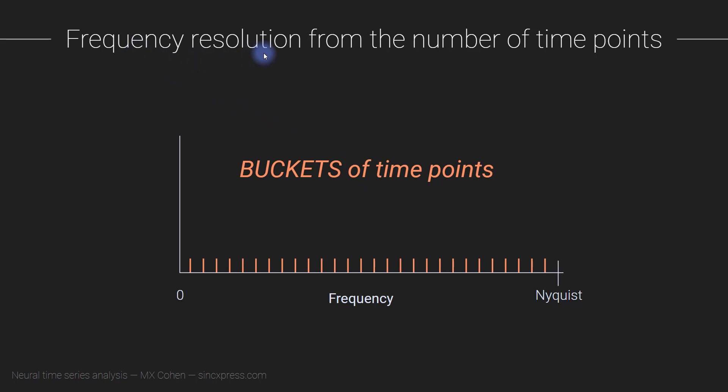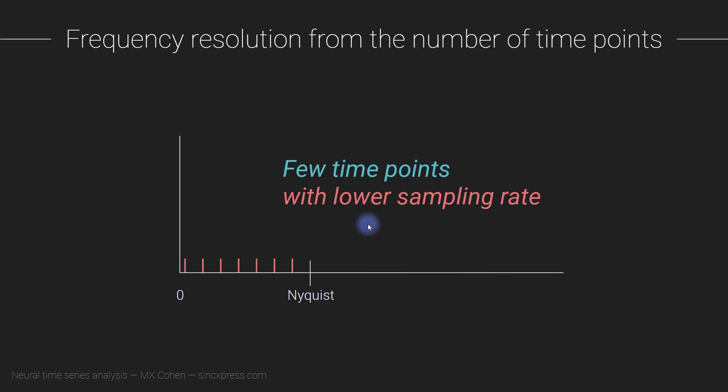The frequency resolution is determined by the number of time points. It is also true that if you have a relatively small number of time points with sparse frequency resolution, and then you change the sampling rate, let's say you down sample the data but keep the number of time points the same, that will actually increase the frequency resolution because you have the same number of frequency bins but the Nyquist is now lower, so those get packed into a smaller area.